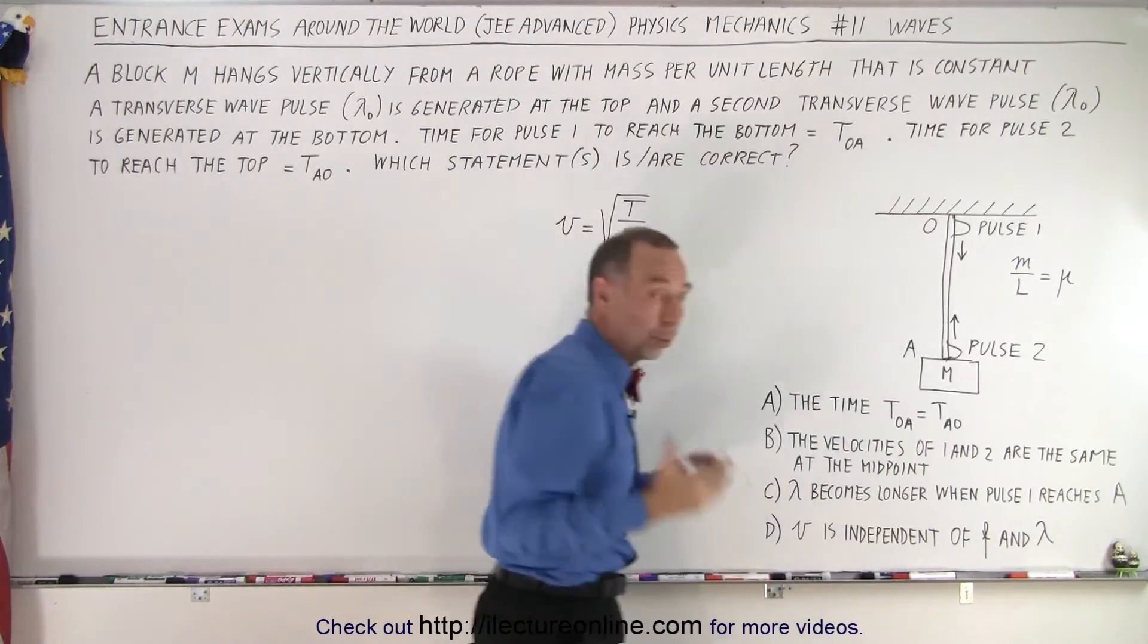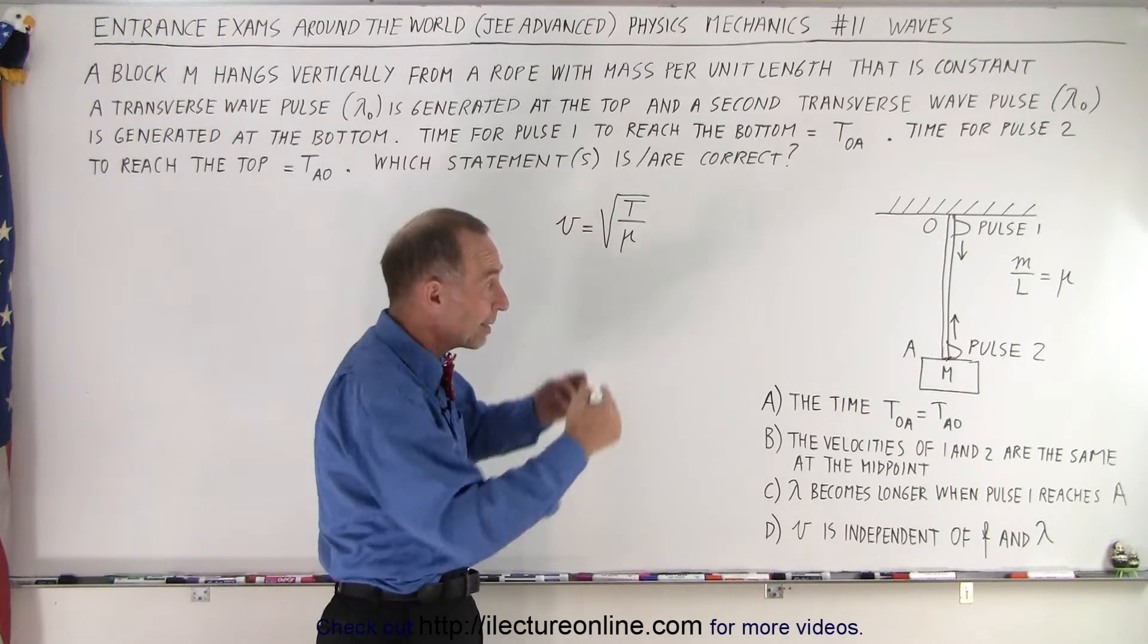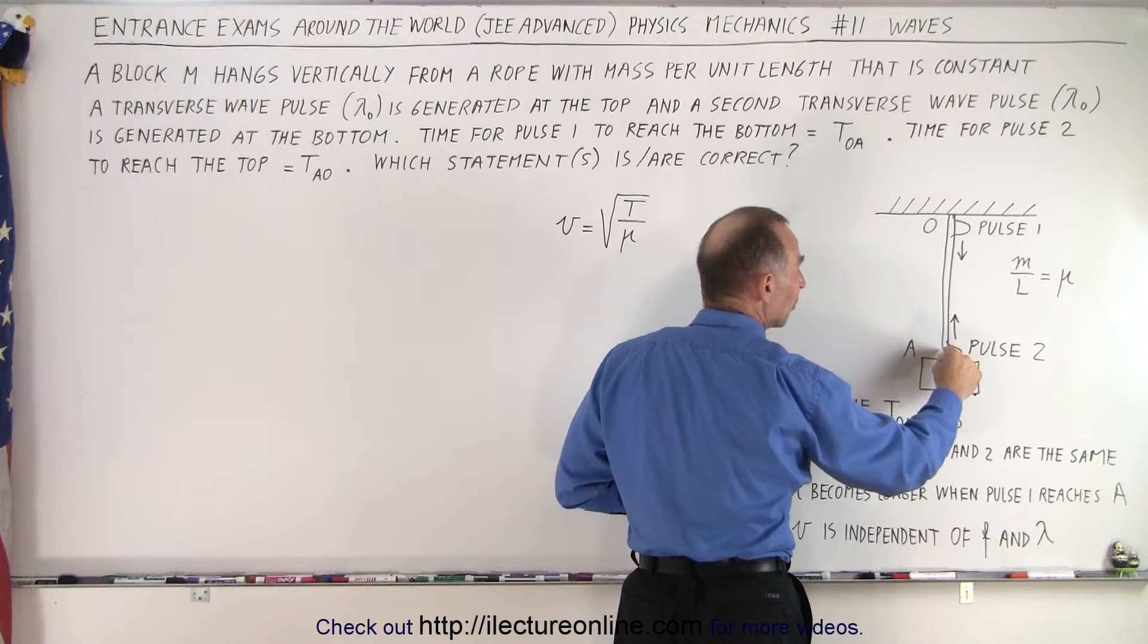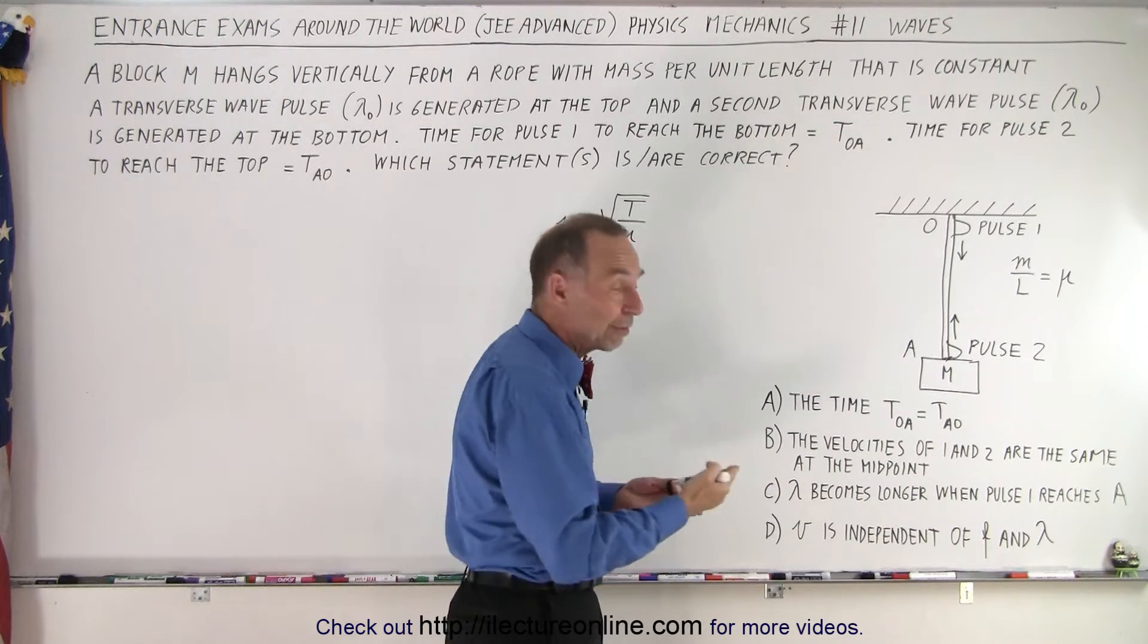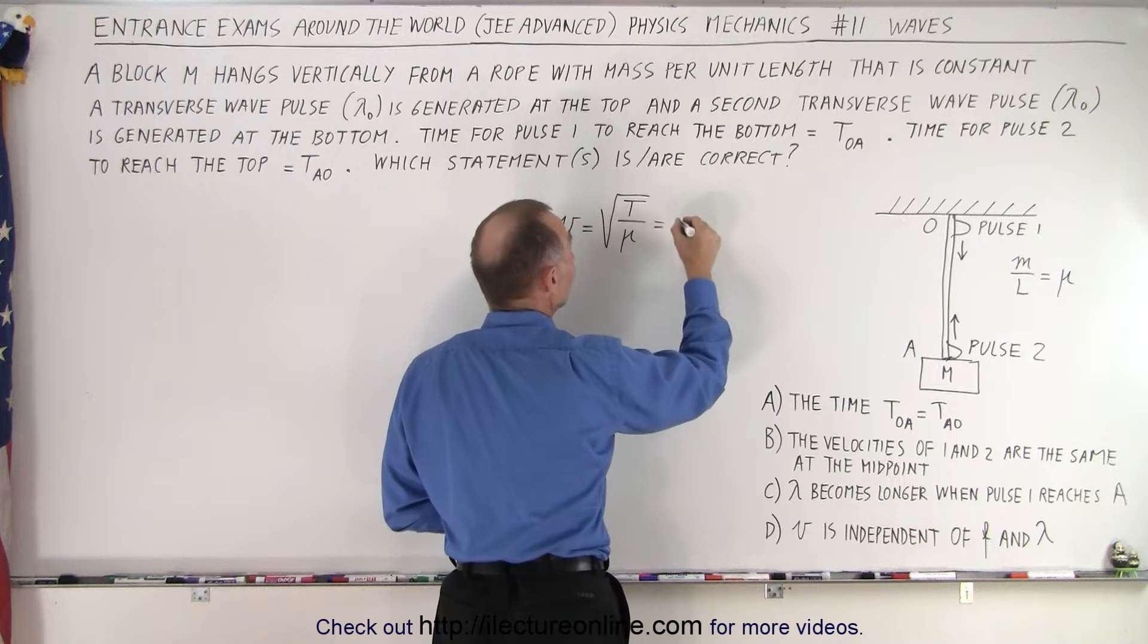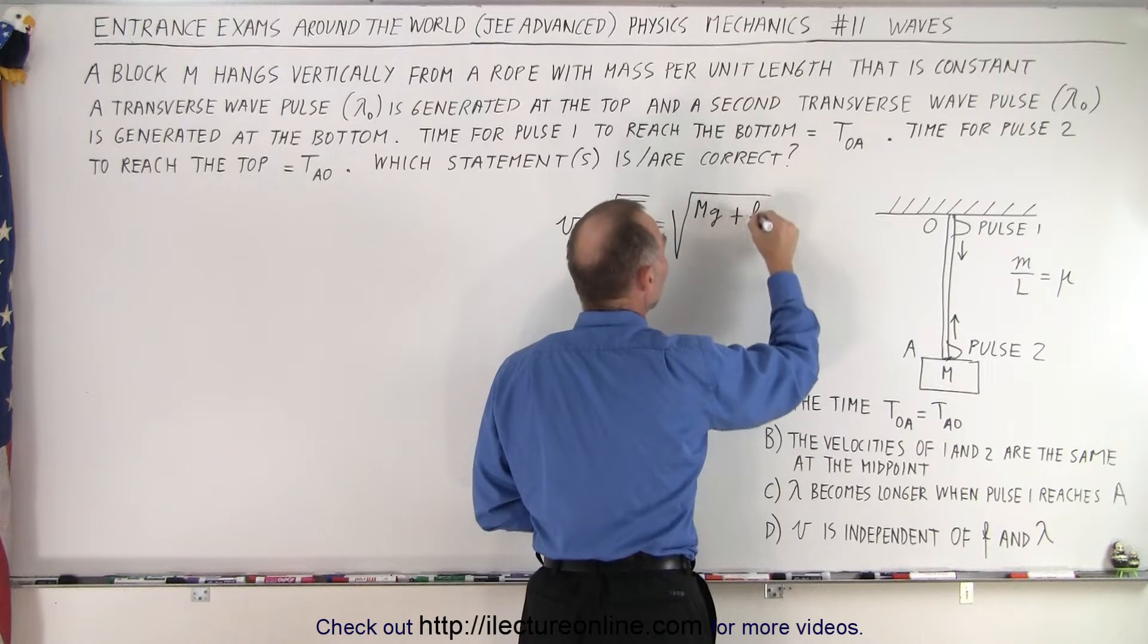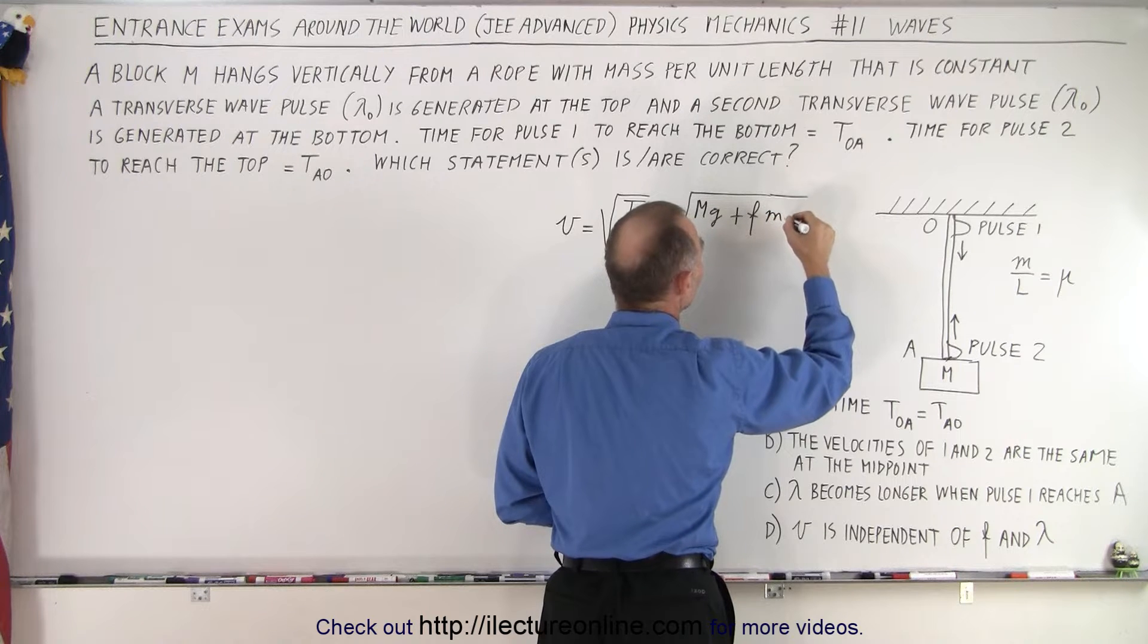Mu is a constant according to the problem. The tension is going to be determined by the amount of weight hanging from the rope at any point along the rope. The tension will be greater at the top and smaller at the bottom. That means at the top the wave will travel faster and at the bottom the wave will be traveling slower. The velocity is indeed changing because the tension is changing. So we can write this as the square root of mg, that's the weight of the mass at the bottom, plus the fraction of the rope below the point where we're at times m_rope times g.